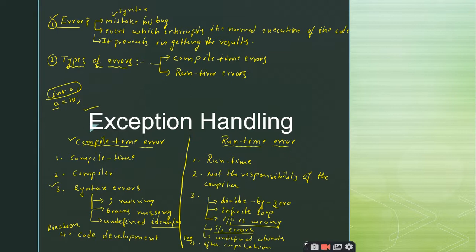We need a special mechanism to handle runtime errors. This special mechanism is called the exception handling mechanism. One important point regarding runtime errors: these runtime errors will cause unusual termination of the program.